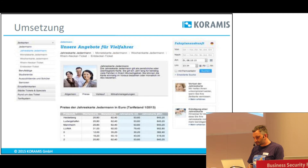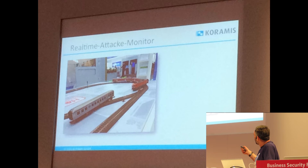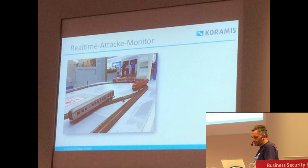Kommen wir zu den Ergebnissen. Ich habe Ihnen einen Angriff mitgebracht, den wir live verfolgen durften — den möchte ich explizit herausstellen. Die Angreifer haben folgendes gemacht: Die haben einen Zug gestartet, obwohl die Schaltung oben auf Rot war, und haben die Weiche so gestellt, dass der Zug auf das Abstellgleis gefahren ist und letztendlich diesen Waggon gerammt hat. Das wäre im wirklichen Leben ein erheblicher Sachschaden und natürlich auch Personenschaden gewesen.